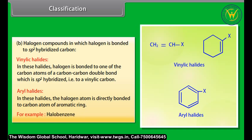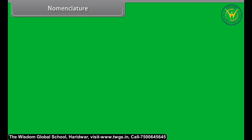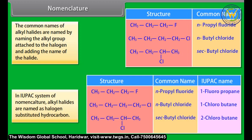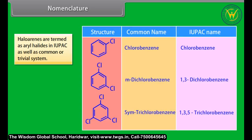In the common name system, alkyl halides are named by naming the alkyl group attached to the halogen and adding the name of the halide. In the IUPAC system, alkyl halides are named as halogen-substituted hydrocarbons. Haloarenes are termed aryl halides in both IUPAC and common or trivial systems.